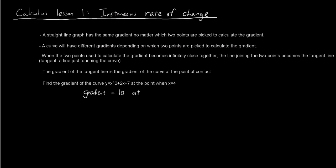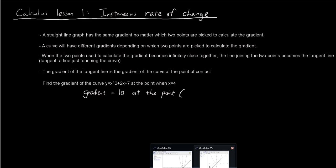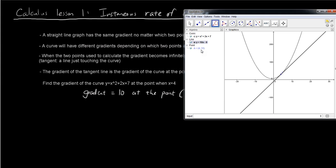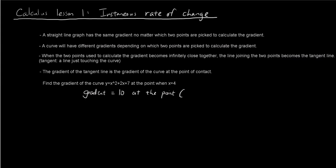So the answer is gradient equals 10 at the point, what was the coordinates again for that point, x equals 4, y is 31 on the curve y equals x squared plus 2x plus 7.